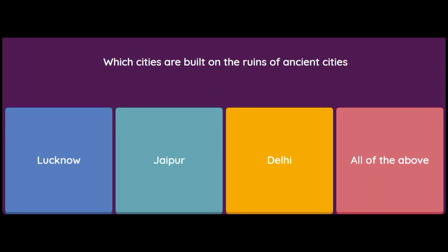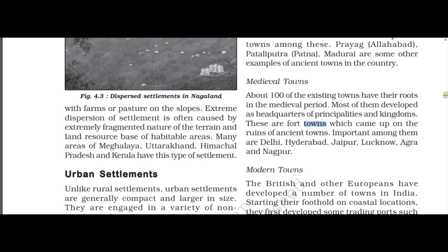Which cities are built on the ruins of ancient cities? Lucknow, Jaipur, Delhi, or all of the above? The answer is all of the above — Lucknow, Jaipur, and Delhi are all built on the ruins of ancient cities. According to the book, these are medieval towns. About a hundred existing towns have their roots in the medieval period and developed as headquarters of principalities and kingdoms. Important among them are Delhi, Hyderabad, Jaipur, Lucknow, Agra, and Nagpur. Towns built on the ruins of ancient towns are called medieval towns.